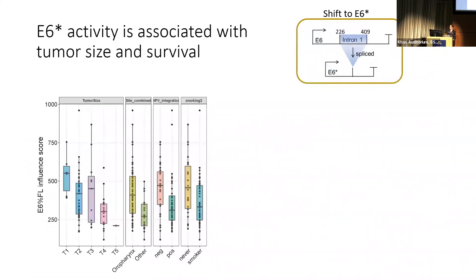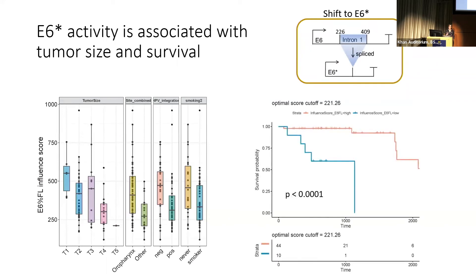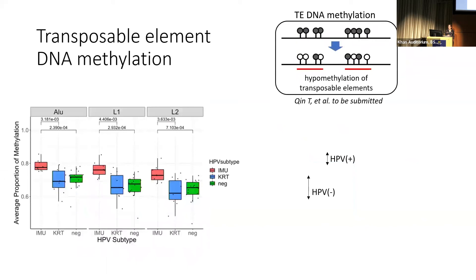The third feature is E6-STAR activity, which we found to be correlated with tumor size at diagnosis as well as other features including whether the patient is a smoker. Using bioinformatic methods to estimate the E6-STAR activity — not just looking at its expression — we see that patients with higher E6-STAR activity in their tumors have significantly worse survival.